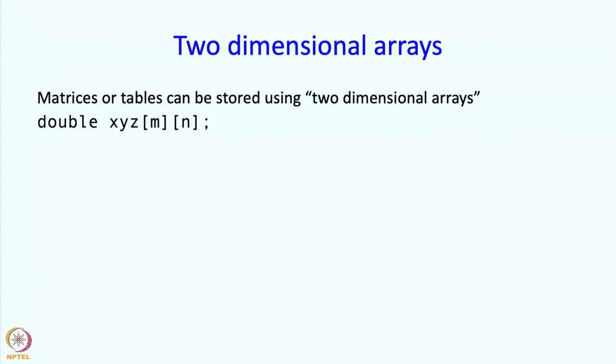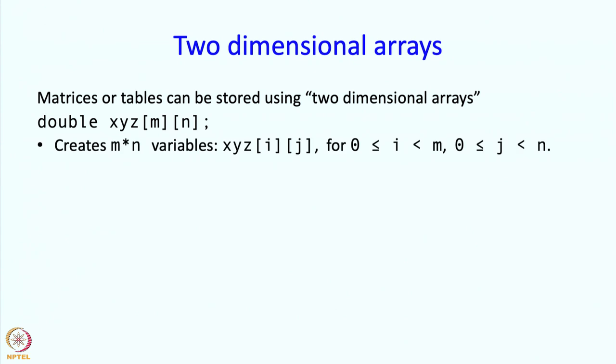Two-dimensional arrays are quite nice because you can store matrices or tables using them, and also other things which we will see in a minute. This is how you might declare a two-dimensional array of doubles. It creates m times n variables, accessed with names like xyz[i][j], where i must be between 0 and m, and j between 0 and n, with the upper bounds not inclusive.